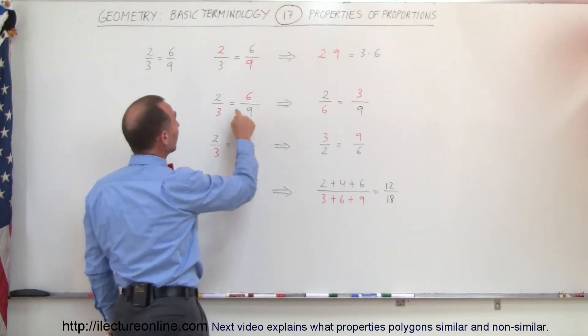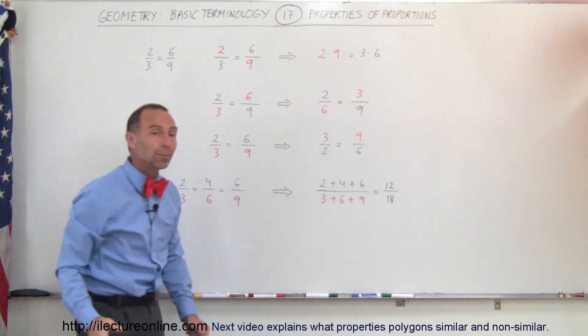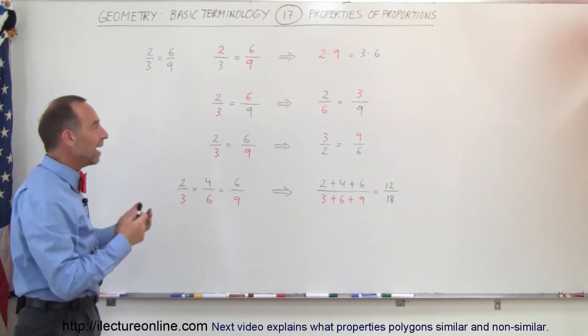And what we could also have done is we could have moved the 2 and the 9, we could move the 9 over there and the 2 over there, and we would have another proportion that would be valid.